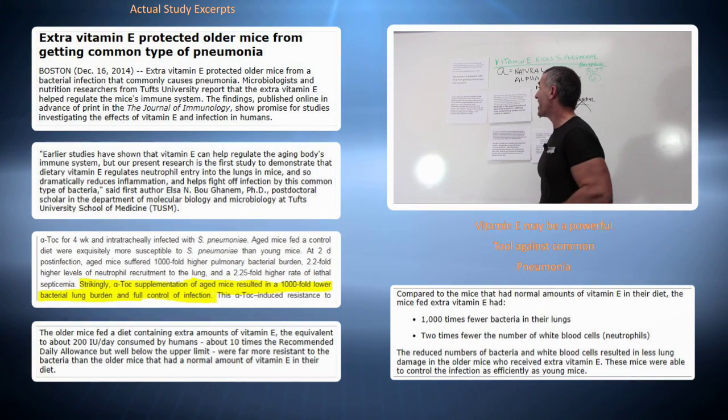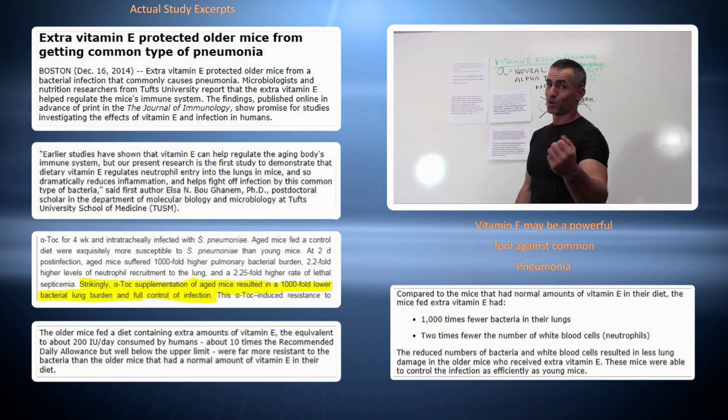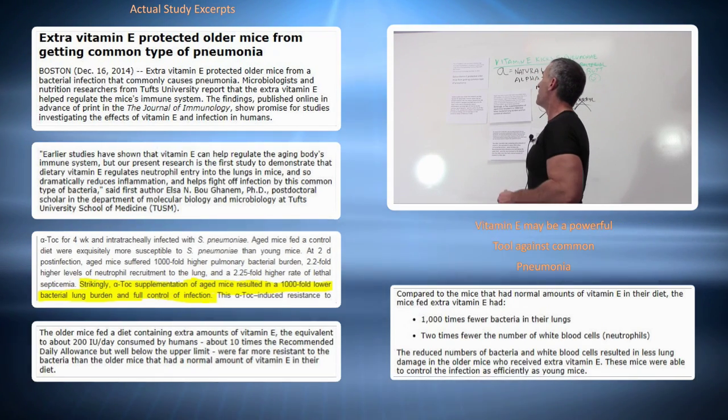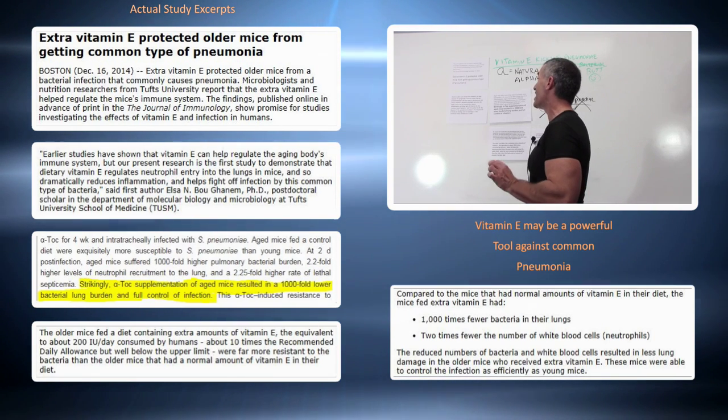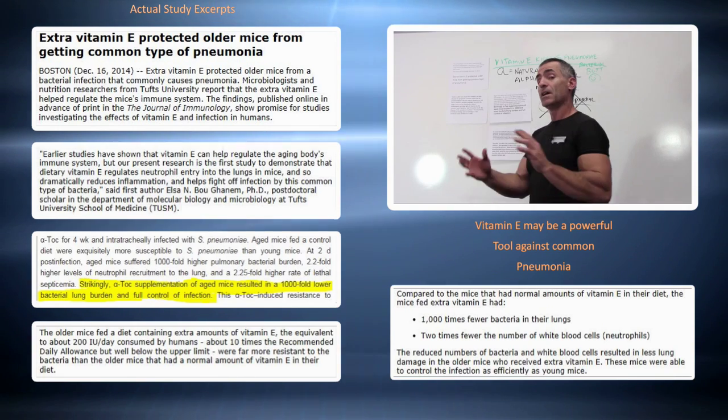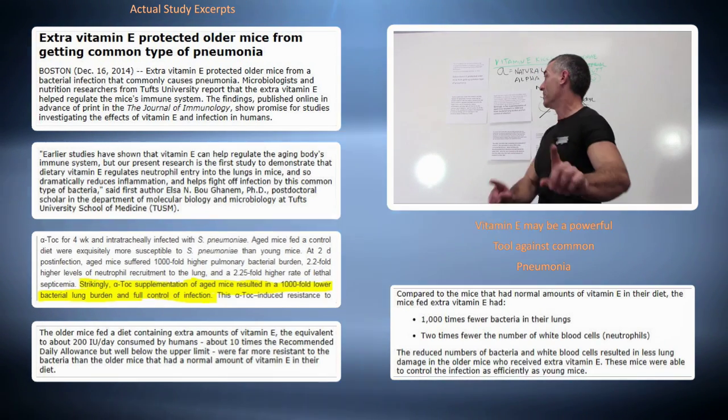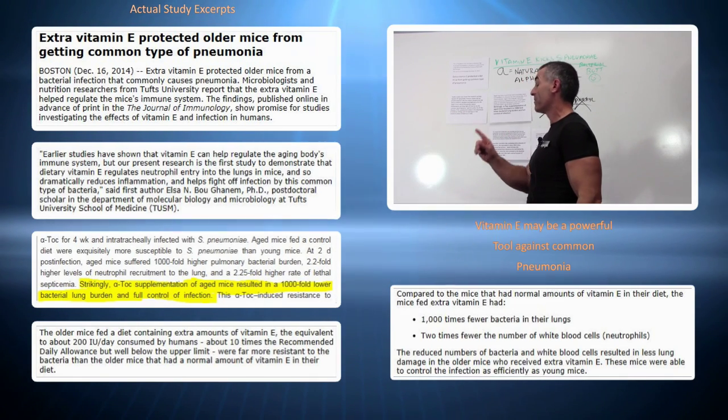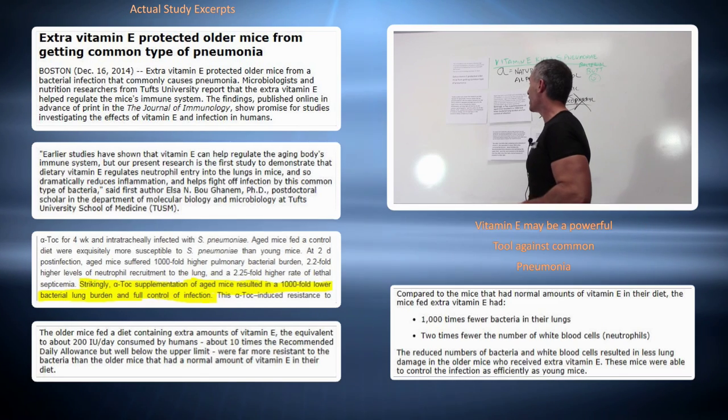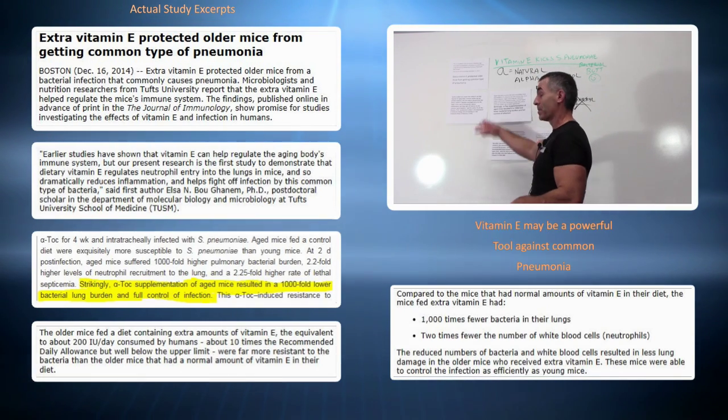Earlier studies have shown that vitamin E can help regulate the aging body's immune system, as opposed to what you hear on the TV news. But our present research is the first study to demonstrate that dietary vitamin E regulates neutrophil entry into the lungs in mice. They knew vitamin E helps protect the lungs but they didn't know how well it did, as I continue forward.